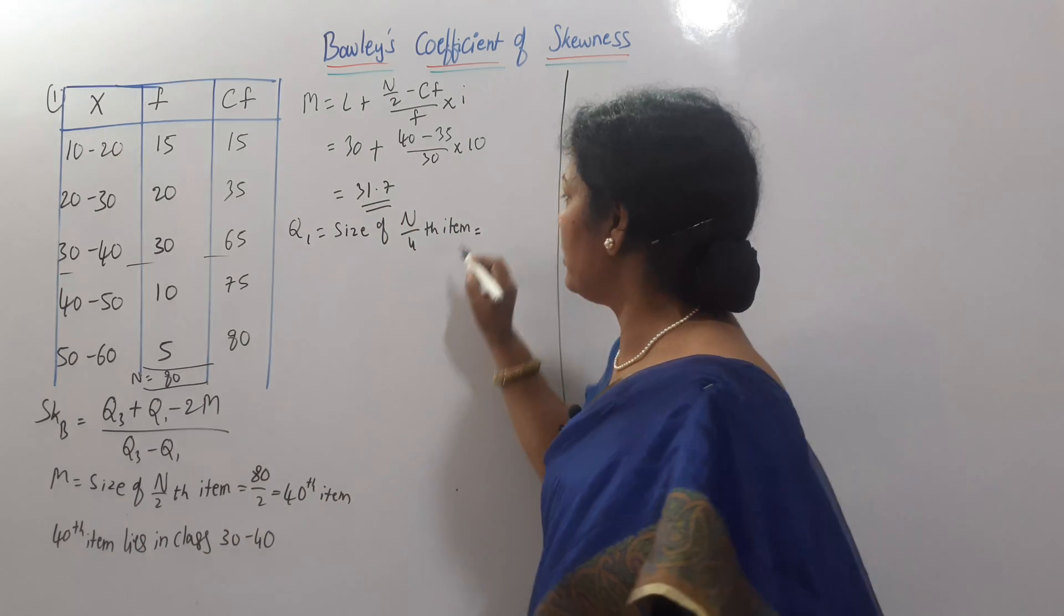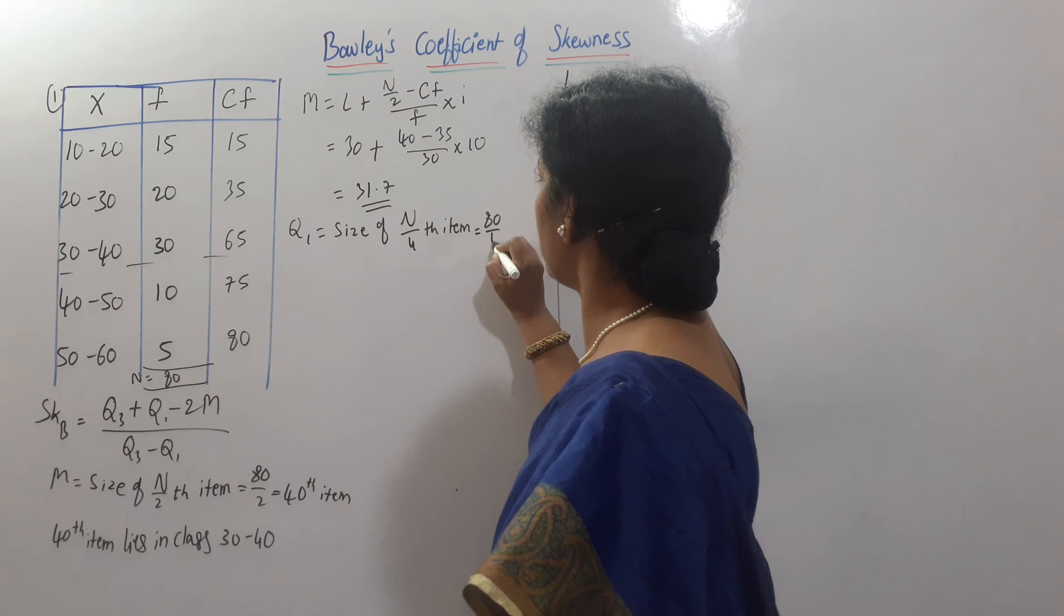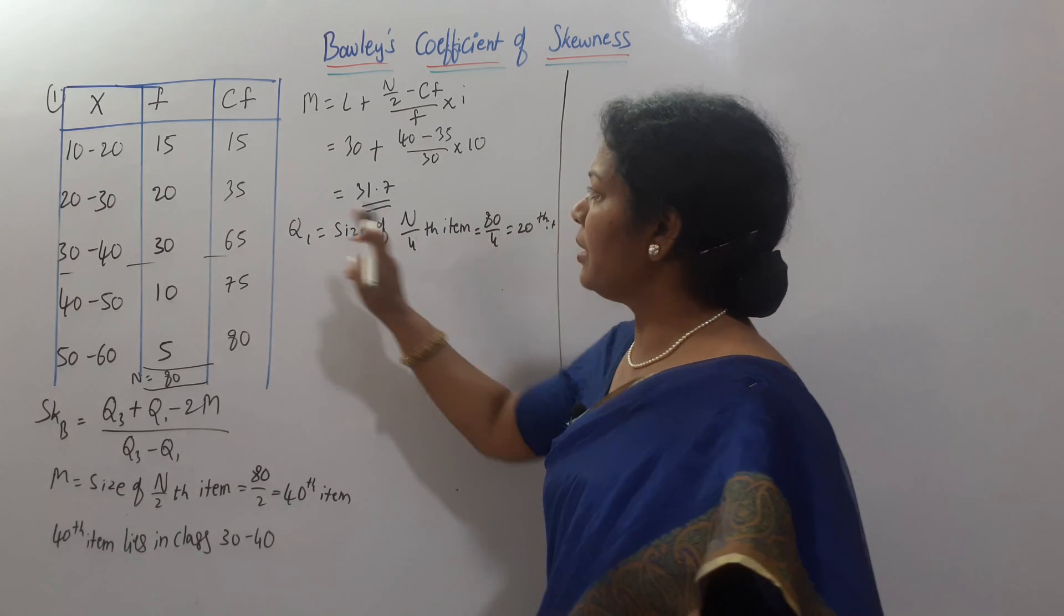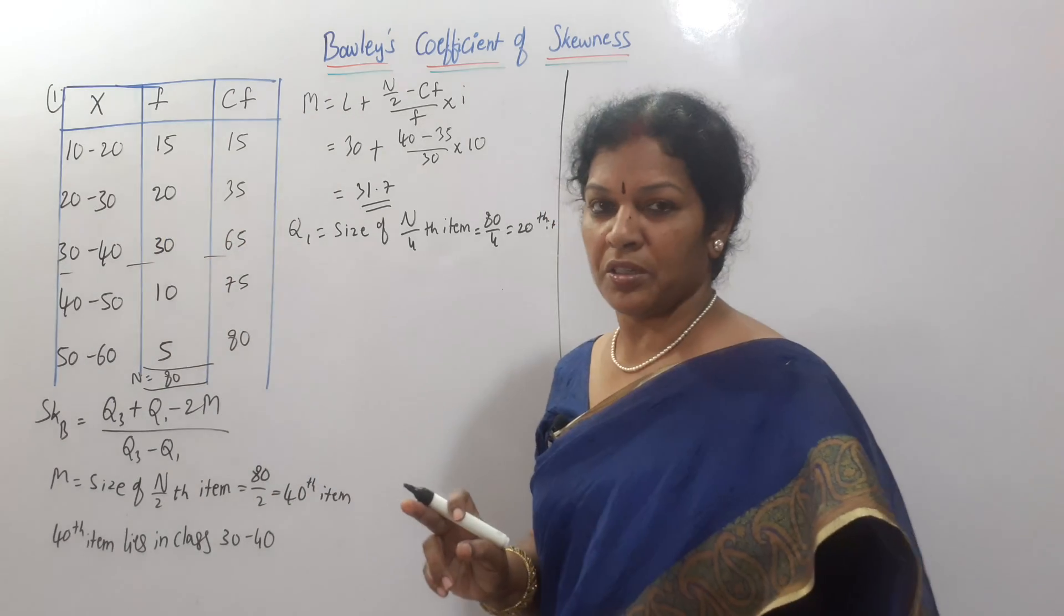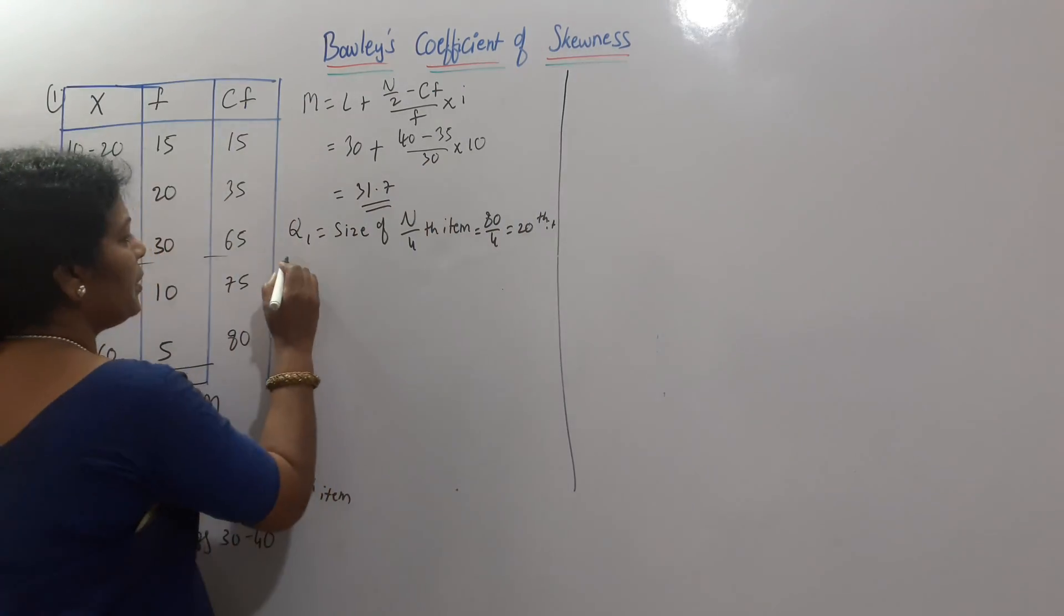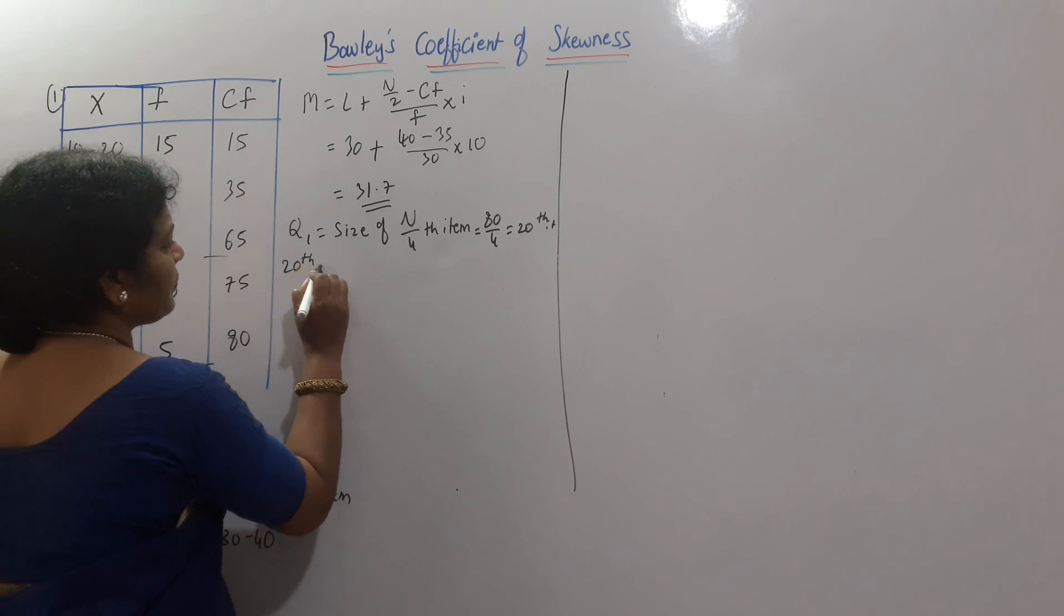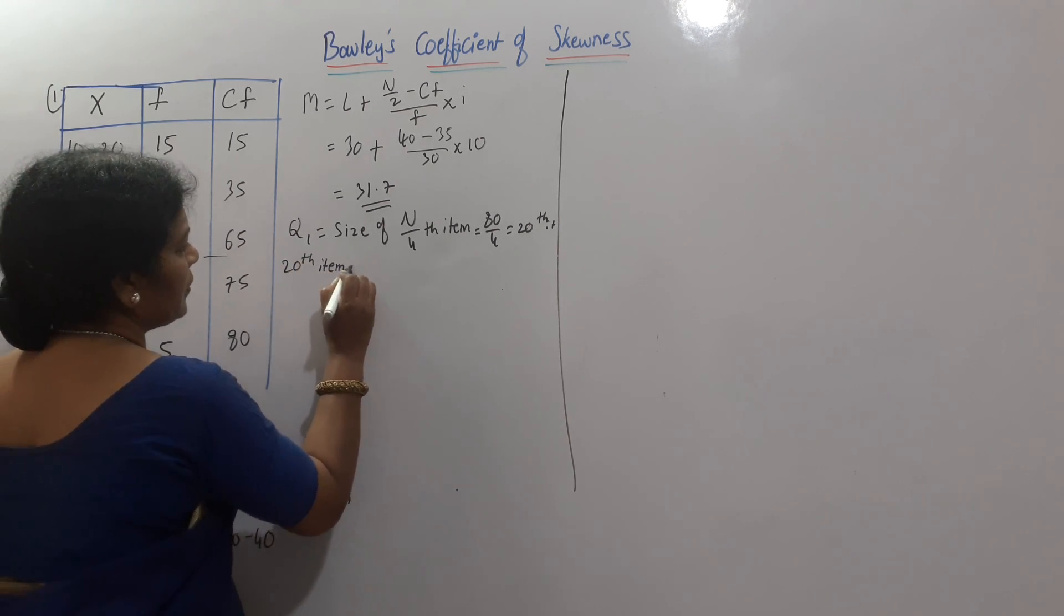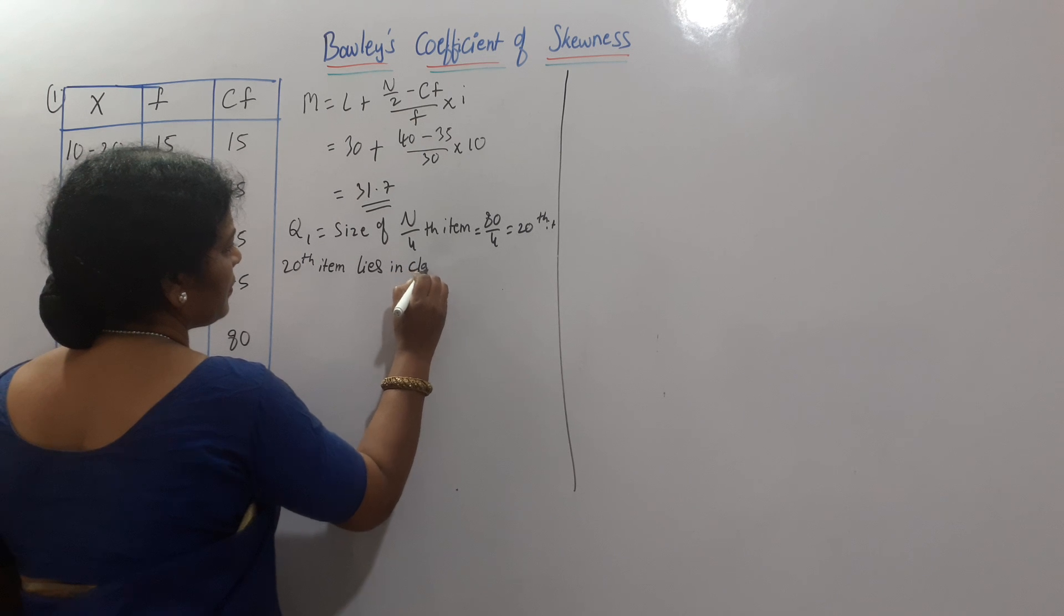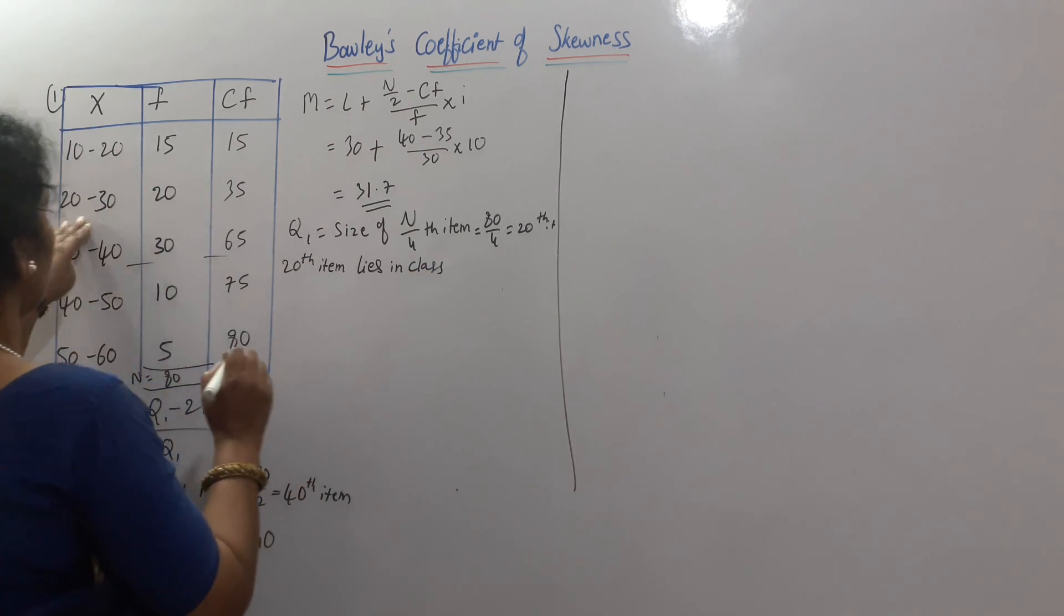N is here 80, 80 by 4 means 20th item. 20th item lies in class 20 to 30. Here, we will write one simple sentence. 20th item lies in class 20 to 30.